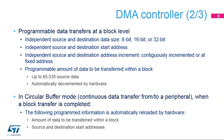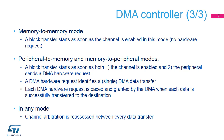In circular buffer mode, continuous data transfer from or to a peripheral occurs when a block transfer is completed. The programmed amount of data to be transferred within a block is automatically reloaded by hardware, as well as the source and destination start addresses. In memory-to-memory mode, a block transfer starts as soon as the channel is enabled — there is no hardware request. Whereas in peripheral-to-memory and memory-to-peripheral modes, a block transfer starts as soon as both the channel is enabled and the peripheral sends a DMA hardware request.